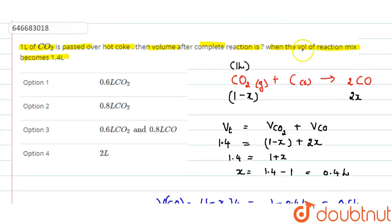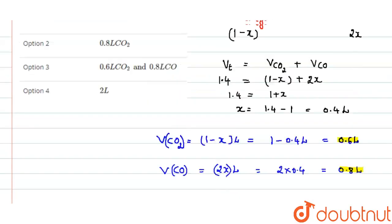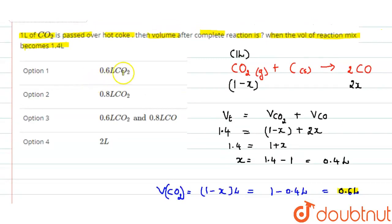So the question is about what is the volume after complete reaction. We have to calculate the volume of both carbon dioxide and carbon monoxide. So carbon dioxide is 0.6 liter, carbon monoxide is 0.8 liter. So in option 1, only carbon dioxide is given. Option 2, 0.8 carbon monoxide should have been prepared, so option 2 is not correct. In option 3, 0.6 liter of carbon dioxide and 0.8 liter of carbon monoxide is also prepared. So therefore, option 3 is the right choice.